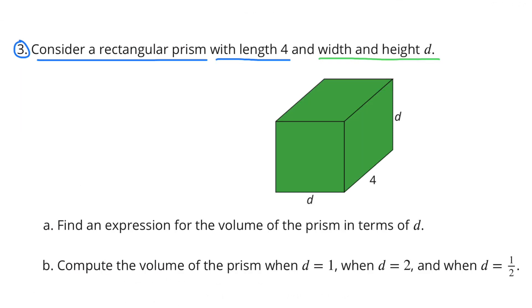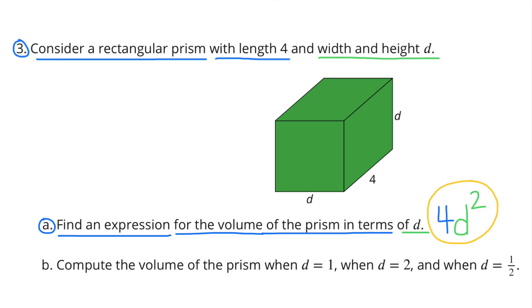Number 3. Consider a rectangular prism with length 4 and width and height d. A. Find an expression for the volume of the prism in terms of d. The answer is 4 times d squared, or 4d to the power of 2.